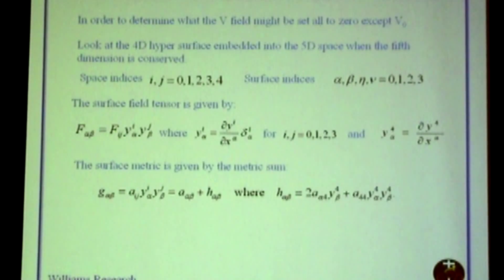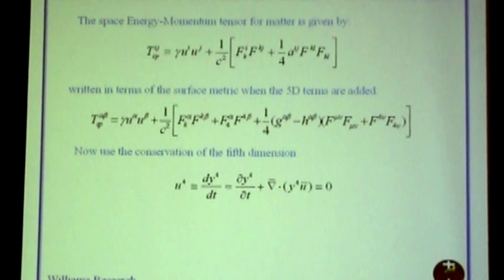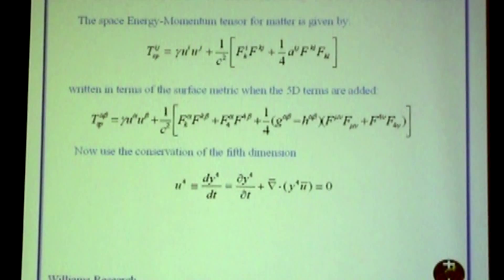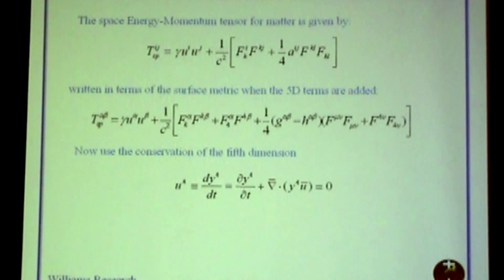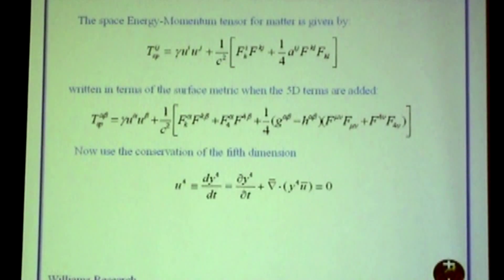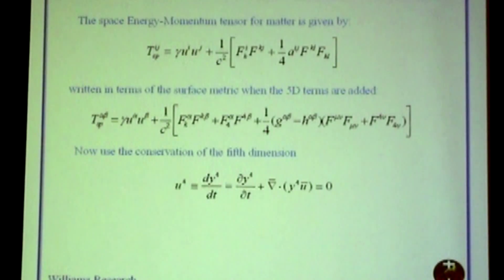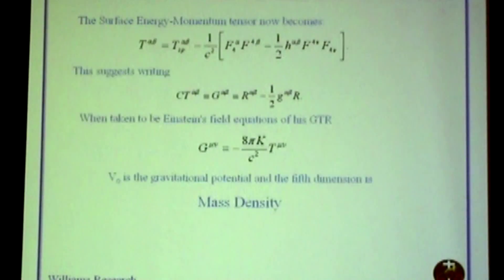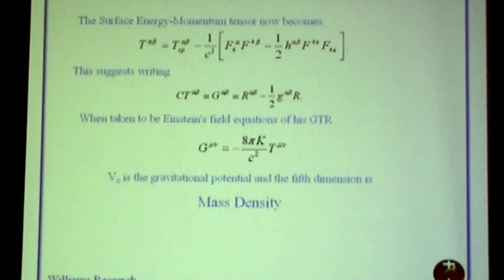You then get the surface field tensors in terms of the space field tensors, and you can relate the space energy-momentum tensors for matter and the space matter in terms of the surface metric, or vice versa. If you consider the conservation of the fifth dimension — and notice the conservation is written in the same mathematical sense as conservation of mass density — then you can write that surface energy-momentum tensor in such a form that when you look at it, you can see Einstein's field equations.